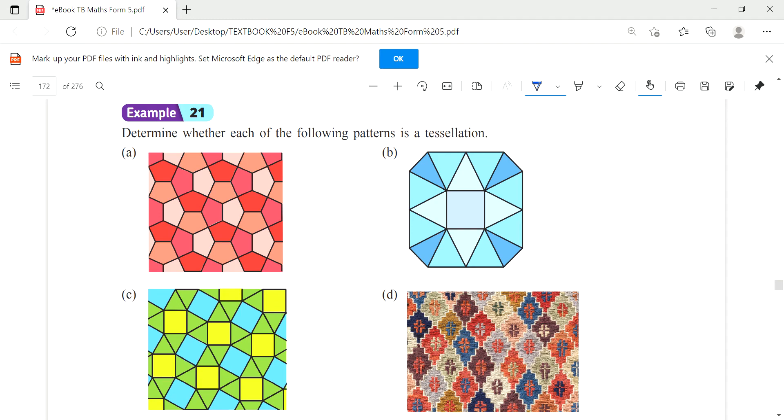Example 21 - let's see if you can determine whether each of the following patterns is a tessellation or not. This one A, what do you think? How many patterns? Only one, that is pentagon. It's recurring, so this is a tessellation.